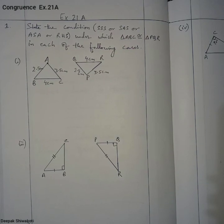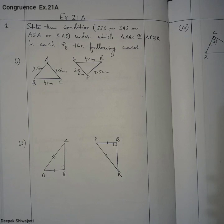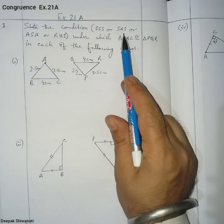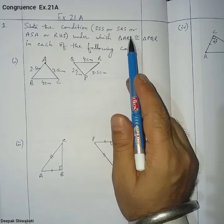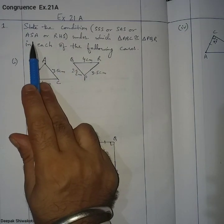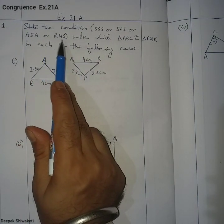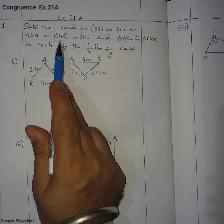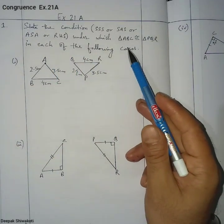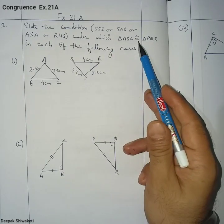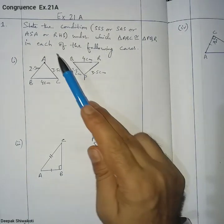Welcome to Class 7 Mathematics. Today we are going to do Exercise 21a from the Congruency chapter, question number one. State the condition — that is SSS (Side Side Side), SAS (Side Angle Side), ASA (Angle Side Angle), or RHS (Right angle Hypotenuse Side) — under which triangle ABC is congruent to triangle PQR in each of the following cases.